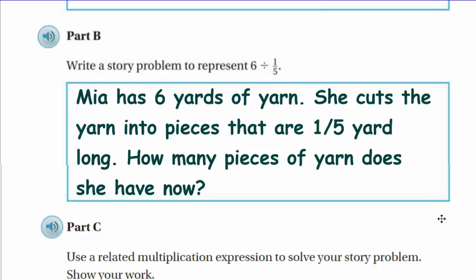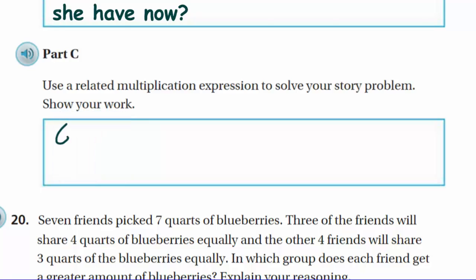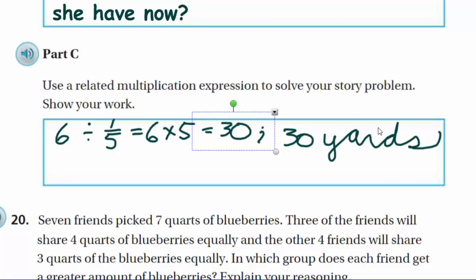Now part C says use a related multiplication expression to solve your story problem. Show your work. Cool. I could do that. So we had 6 yards. I'm going to put my 6 yards. We were dividing it by, that's right, 1/5. And 6 yards divided by 1/5 is equal to 6 times 5 because there's 5 pieces in each yard. And then that's going to equal 30. And then of course, that means 30. This guy came back, huh? That means 30 yards. And let me try my cursive writing. Oh my goodness. Yeah. Wow.